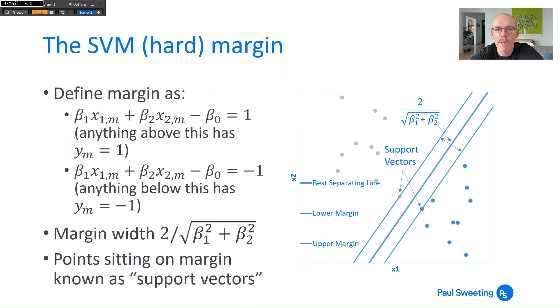So how do we do this? What we do is we define the margins. So we say let's have β₁x₁ₘ plus β₂x₂ₘ minus β₀ is equal to 1 and anything above this line yₘ is equal to 1, then β₁x₁ₘ plus β₂x₂ₘ minus β₀ equals minus 1 and anything below this has a value of yₘ of minus 1, so anything above that top line is solvent anything below the bottom line is insolvent.